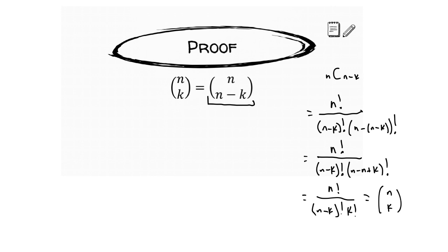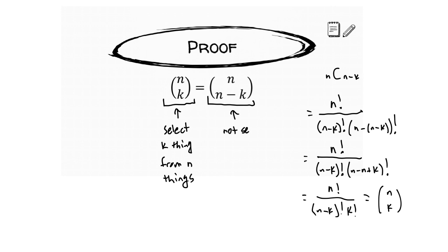That algebraic proof doesn't show us much about what's going on. From an argument standpoint: N choose K counts the number of ways to select K things from N things. Meanwhile, N choose N minus K counts the number of ways to not select K things from N things. You're leaving out certain things every time you select others, so the two ways must be equivalent.